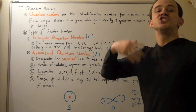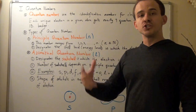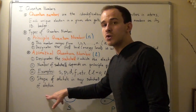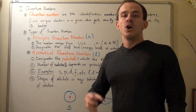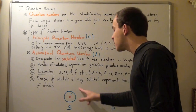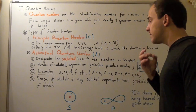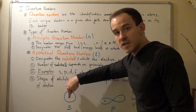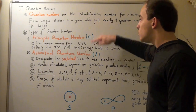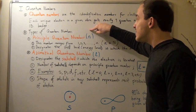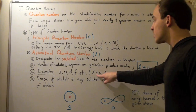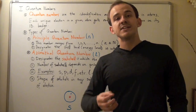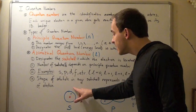Every subshell has an orbital with a certain shape, and the shape of the orbitals represents the most probable location of our electrons — shapes are based on mathematical probabilities. The S subshell has a spherical shape, meaning there is a 90% probability that the electron will be found within this sphere. So if N equals 1, then L equals 0, the subshell is S, and there is a 90% probability the electron is found within that sphere.